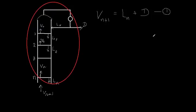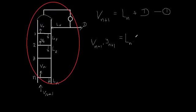At the same time, we can write the material balance for the more volatile component. What is coming in is Vn+1 multiplied by its concentration yn+1, and it equals what is going out: Ln multiplied by its concentration xn, plus D multiplied by xD. This gives us our second equation.